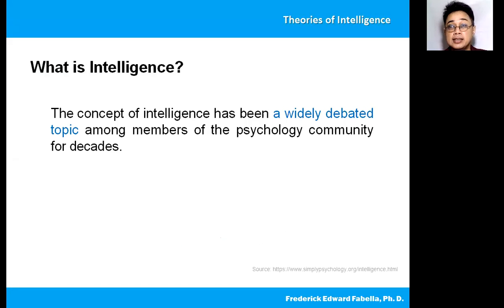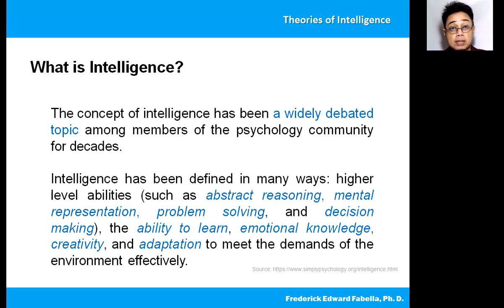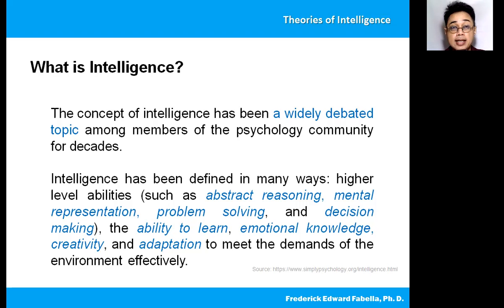The concept of intelligence has been widely debated among members of the psychology community for decades. Intelligence has been defined in many ways, including higher level abilities such as abstract reasoning, mental representation, problem solving, and decision making. It also includes the ability to learn, emotional knowledge, creativity, and adaptation to meet the demands of the environment effectively.